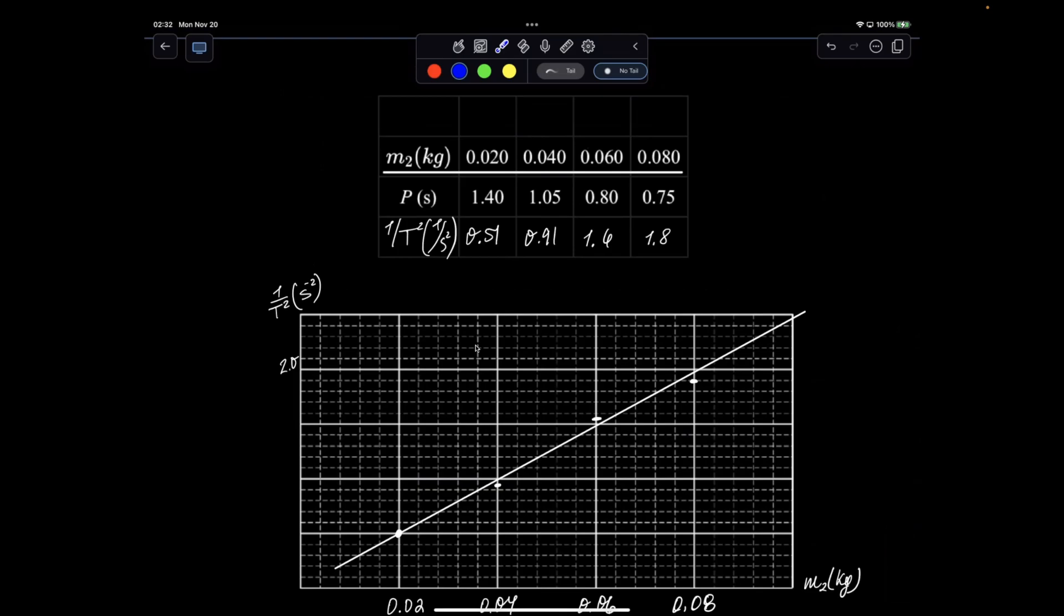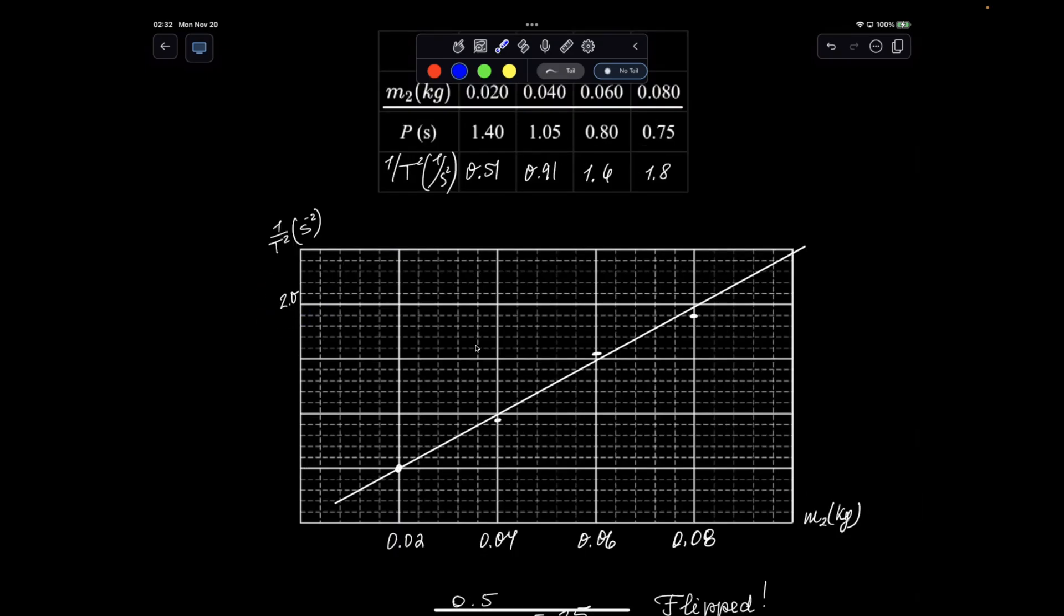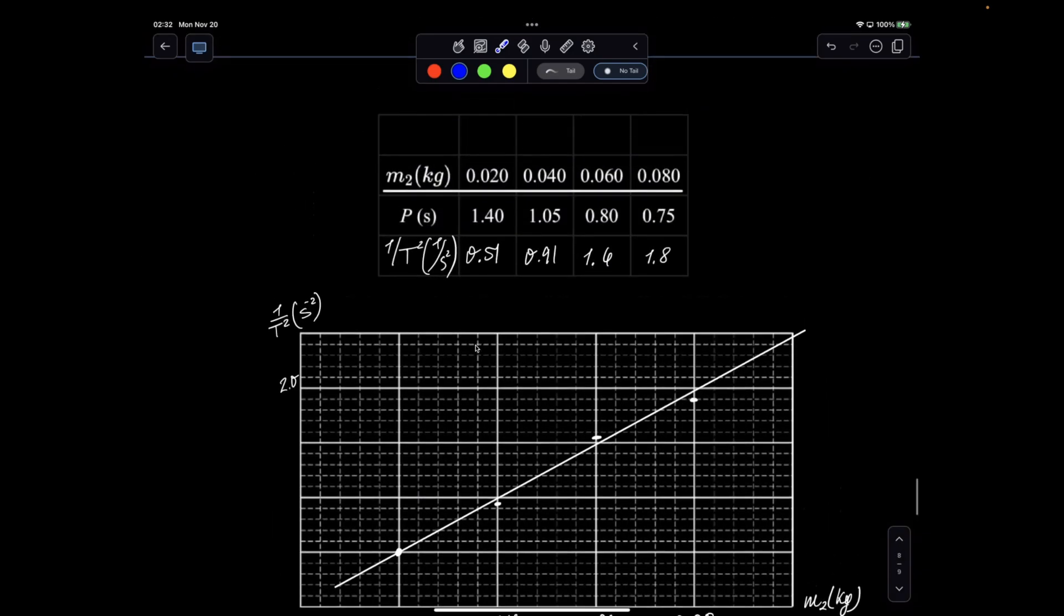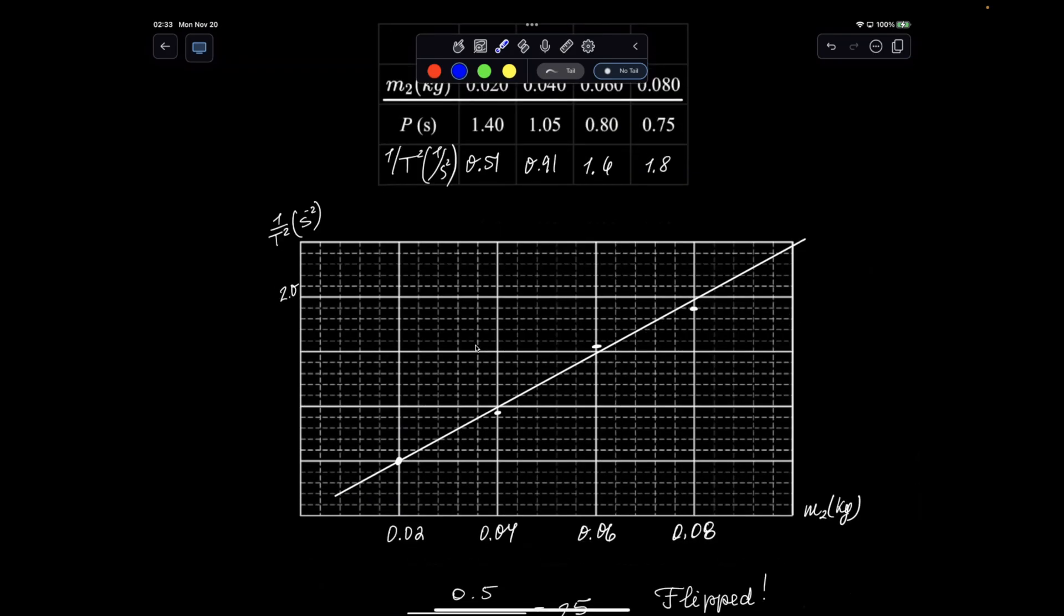And the last option, graphing 1 over period squared, so t to the negative 2, the reciprocal of square period gives me m. So this is exactly the reciprocal of this. Then I just recalculated only the t, kept m as is. So nicely fits in on this axis.